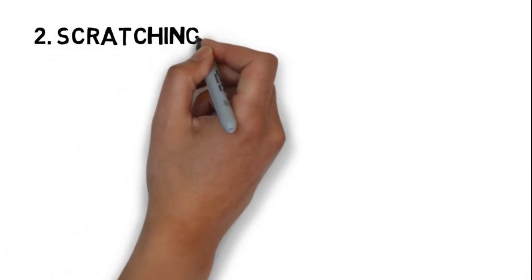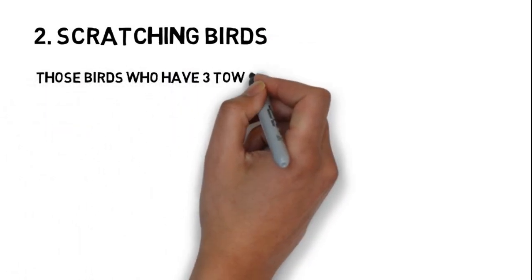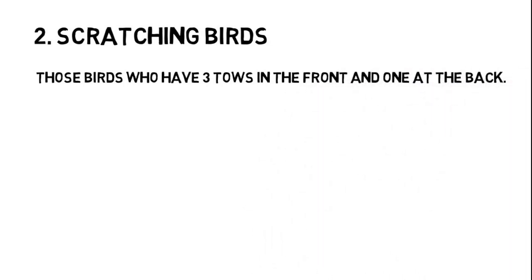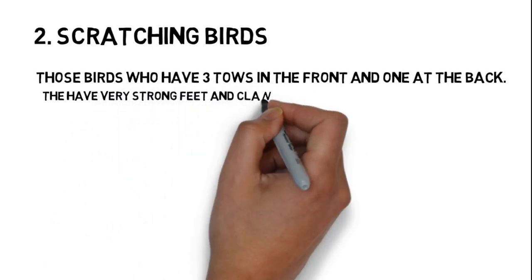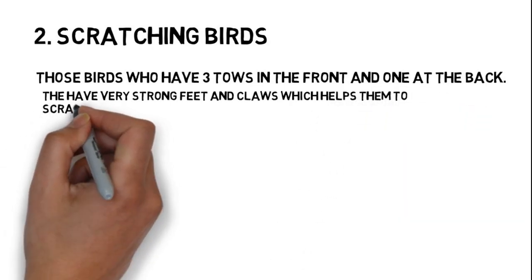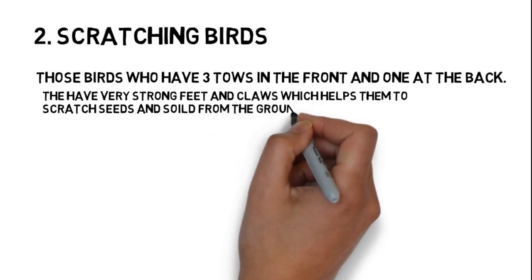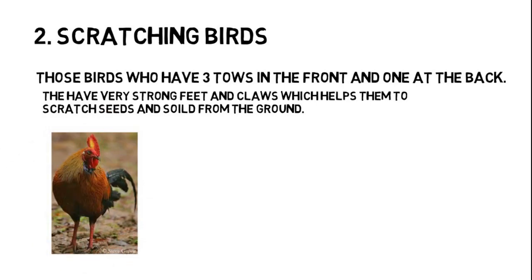Number two, scratching birds. These birds have three toes in front and one at the back. They have very strong feet and claws which help them scratch seeds and insects from soil or ground. For example, hen or parrots.